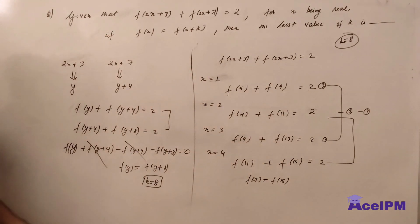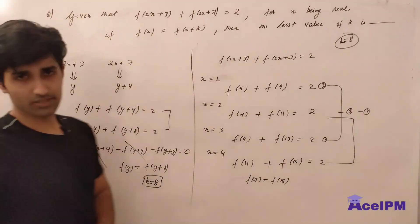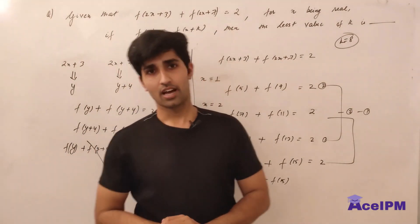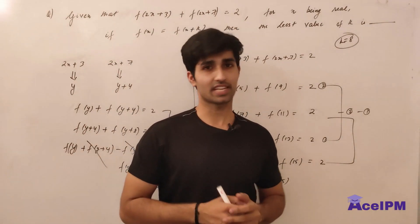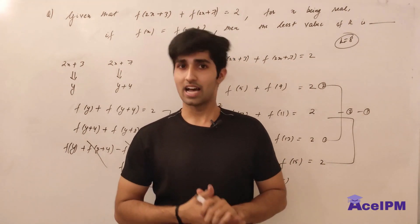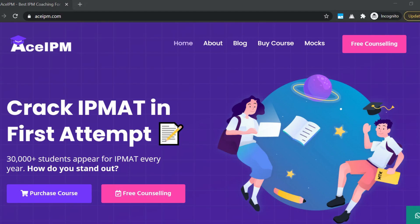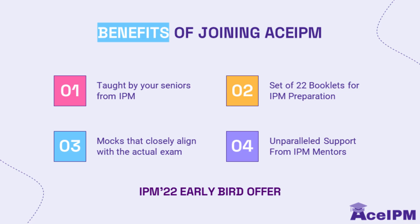So the answer is k equals 8. Sometimes you assume values and try to reach a conclusion — that's a valid approach in questions like this. If you liked the video, you can check our website to purchase the full course. The IPM 2022 batch has also started in the second week of April — a full-year course with over 30 mocks. Please like and subscribe to our channel. Thank you.